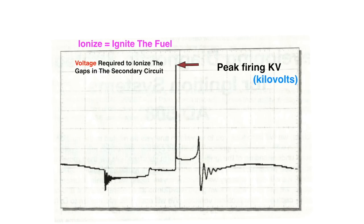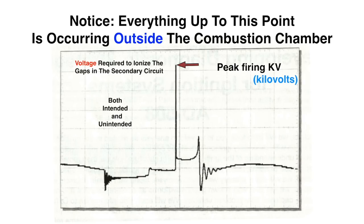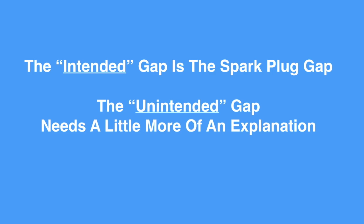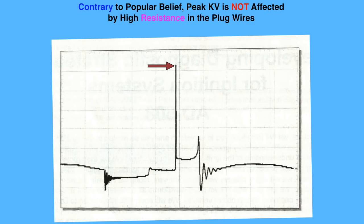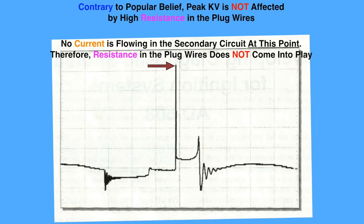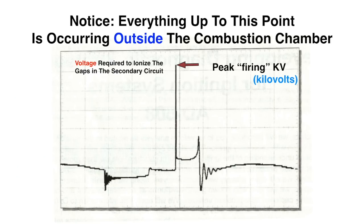Notice that everything up to this point is occurring outside of the combustion chamber. What is the intended gap and what is the unintended gap? The intended gap is the spark plug gap — it's intended to be there. The unintended gap needs a little more explanation. Contrary to popular belief, peak kV is not affected by high resistance in the spark plug wires. No current is flowing in the secondary circuit at this point, therefore resistance in the spark plug wires does not come into play — since there's no flow, resistance has nothing to resist.